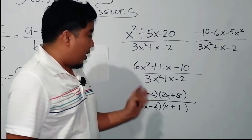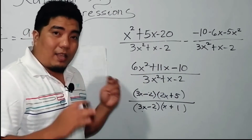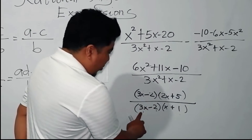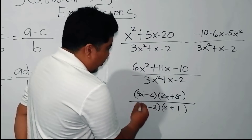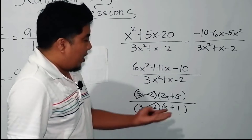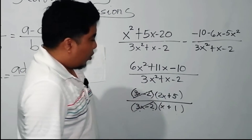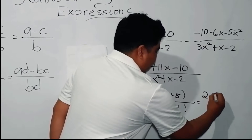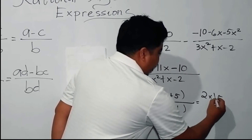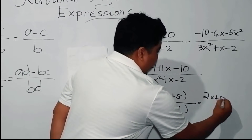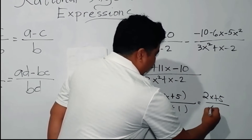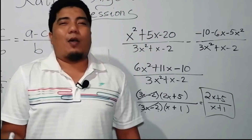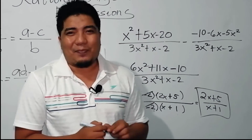Let us check whether there are identical factors. We have 3x minus 2 in both numerator and denominator — this will be cancelled, leaving us 2x plus 5 and x plus 1. So this will be our final answer.